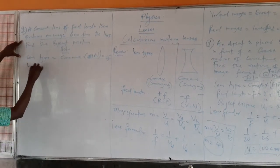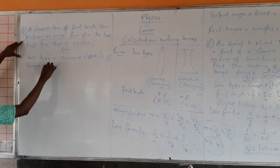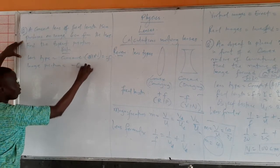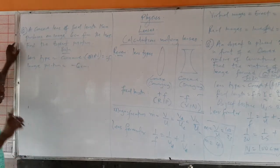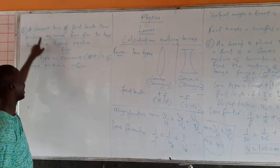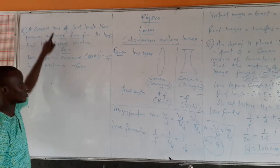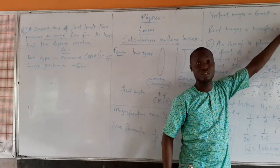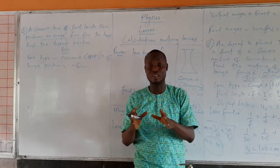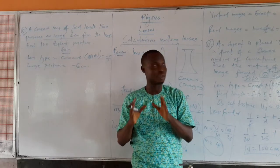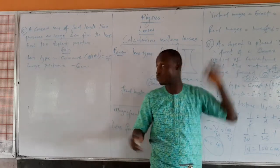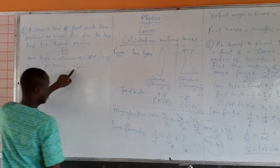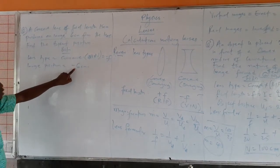The image position is minus 6 cm. Why the minus? Because a concave lens will always form a virtual image, and a virtual image is always taken as a negative distance. So the image distance is minus 6 cm.